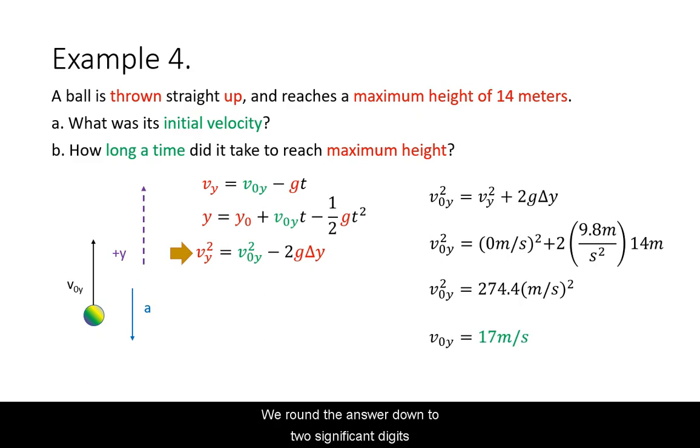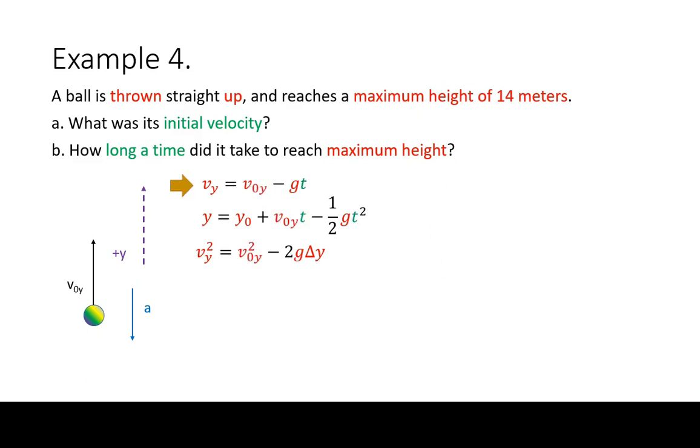We round the answer down to two significant digits at the end. Now that we have initial velocity, we can update our kinematic equations to select one for the other unknown time.